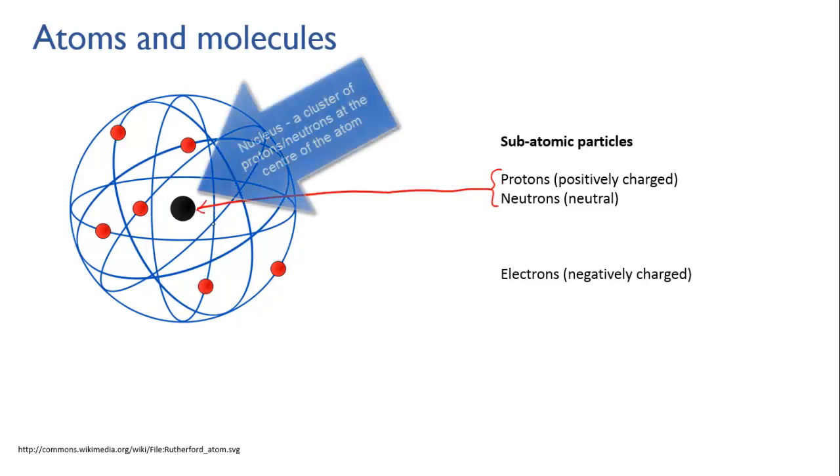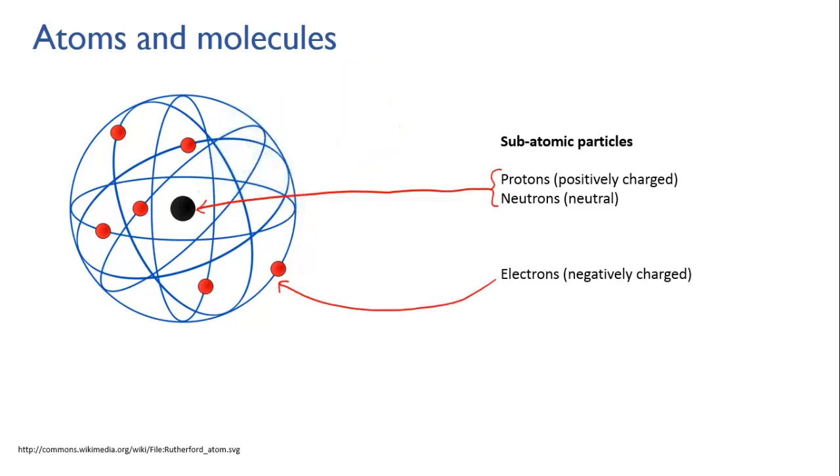The protons and neutrons are clumped together in the nucleus, in the centre of the atom, and the electrons are whizzing around the outside. Now, this is a simplified picture and we're going to get into more detail about what an atom is really like later on. But it'll serve us just for now.